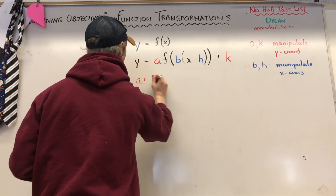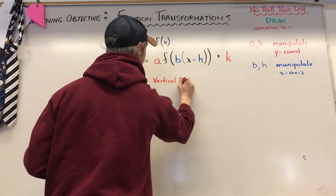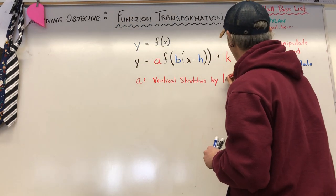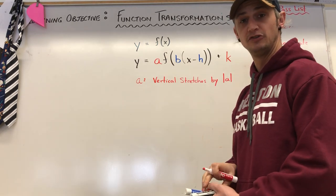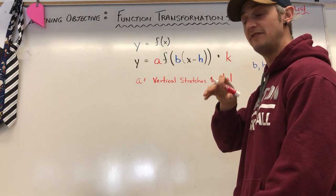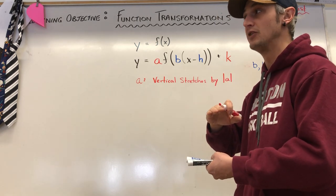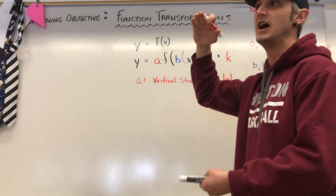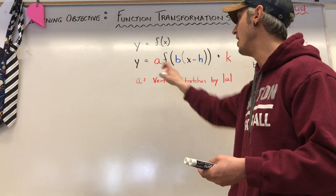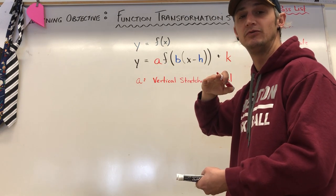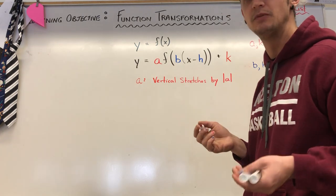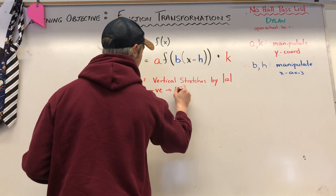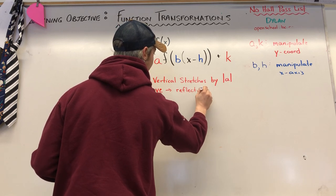In the last video we talked about manipulations with 'a'. We know that 'a' is responsible for vertical stretches along the y-axis by a factor of the absolute value of a. So if a is 3 we are stretching our function by a factor of 3 — if our initial function had a range of 0 to 4, our new function should go from 0 to 12. Conversely, if we apply one half, all y-coordinates for the same x's are split in half.